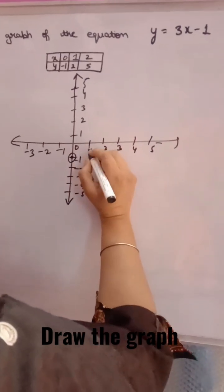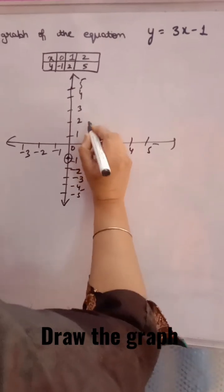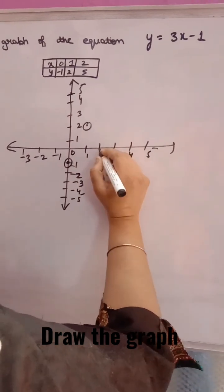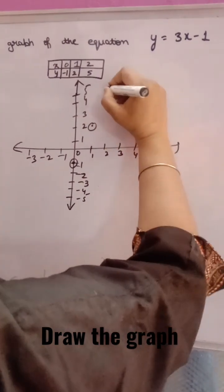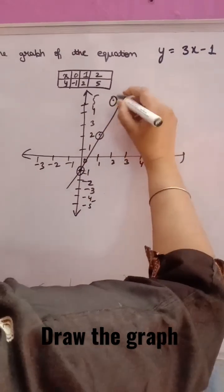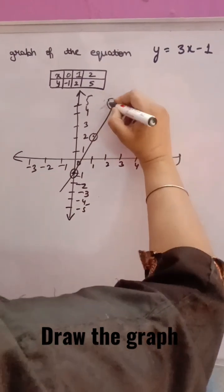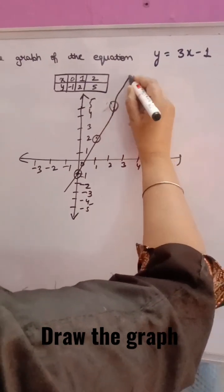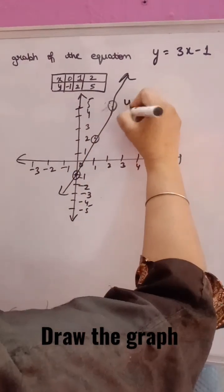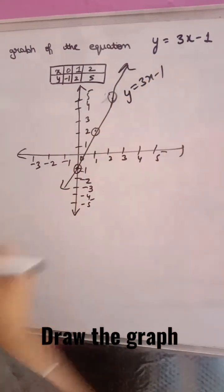When x is 1, y is 2 — mark that point. When x is 2, y is 5 — mark that point. With the help of a scale on graph paper, join all the points and you will get this type of graph for y equals 3x minus 1. Thank you.